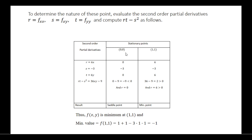For the first stationary point (0, 0): the value of r is 0, s is minus 3, and t is 0. So rt minus s squared equals minus 9, which is less than 0. Therefore, at the stationary point (0, 0), the function has a saddle point.